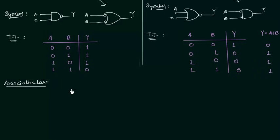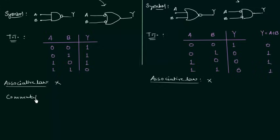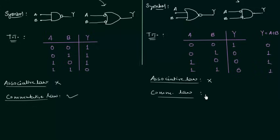Only 2 logic gates do not follow the associative law, and they are NAND and NOR — the universal gates do not follow the associative law. However, the commutative law is followed by both of them: NAND gate follows the commutative law and NOR gate also follows the commutative law. You can easily prove these.